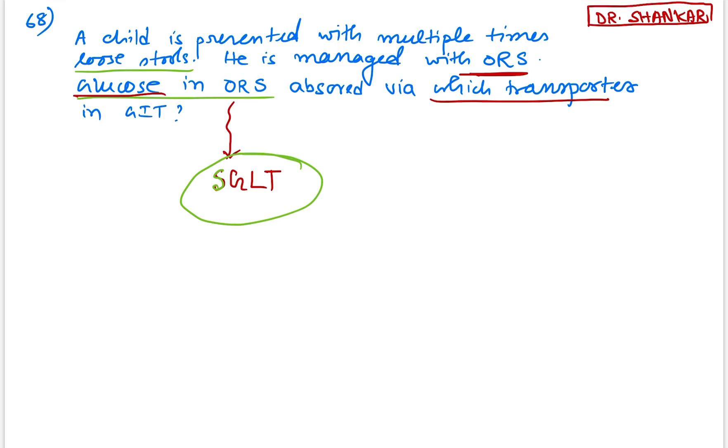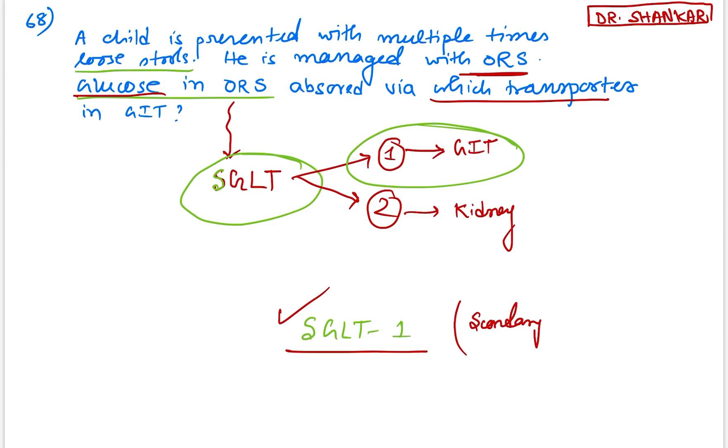Now the question is, which one? Either SGLT1 or SGLT2? SGLT1 is present in GIT and SGLT2 is predominantly present in kidney. So here the question is, glucose in the ORS absorbed by which transporter in GIT? It is definitely SGLT1. So the answer will be SGLT1, not SGLT2. So sodium-dependent glucose transporter 1, one type of secondary active transport. This is secondary active transport.